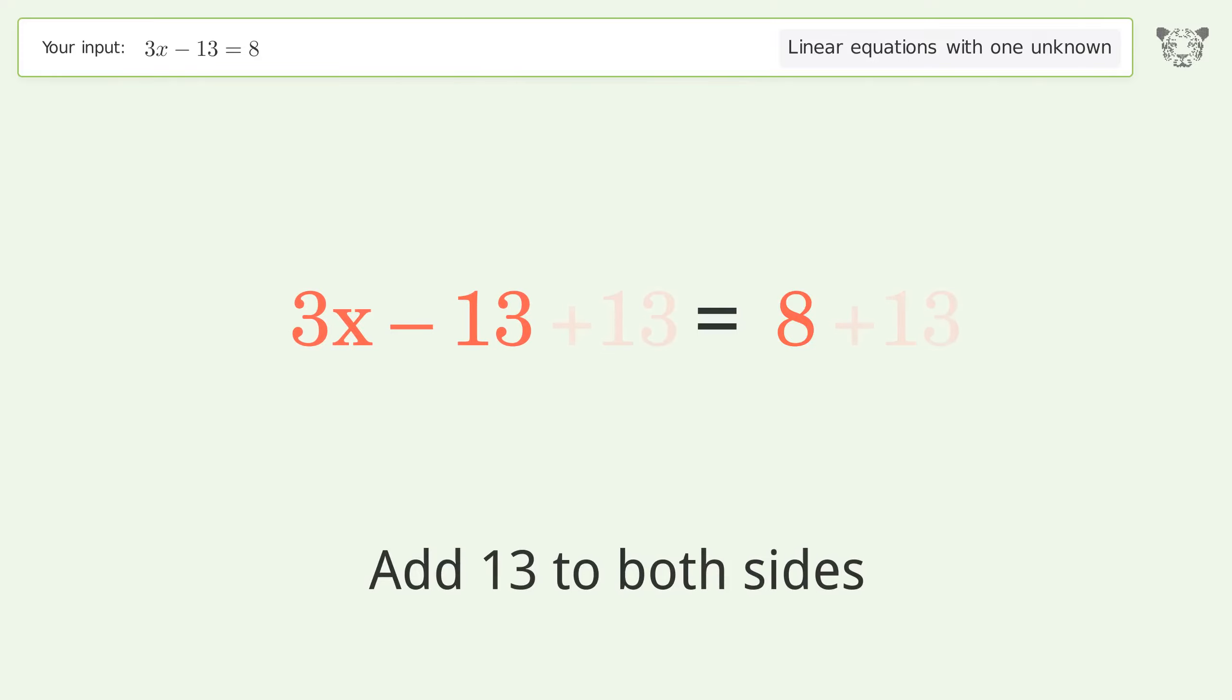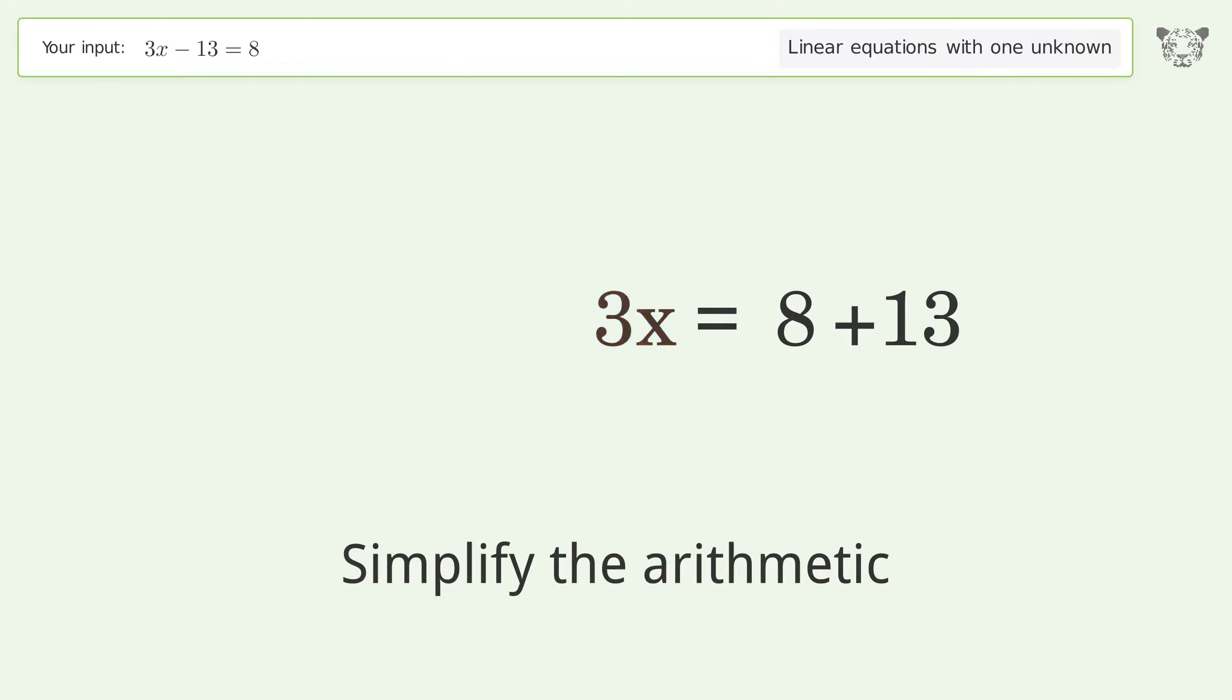Group all constants on the right side of the equation. Add 13 to both sides. Simplify the arithmetic.